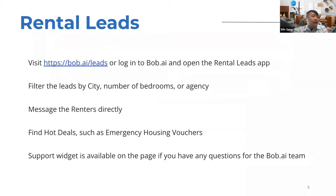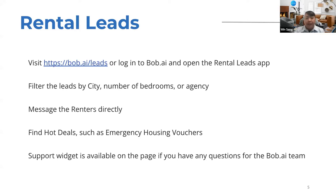For rental leads, visit Bob.ai/leads or log in and open the Rental Leads app. This filters voucher holders by city, number of bedrooms, or any agency you want to work with. You can message renters directly — go to Actions, message the renter, and let them know your unit is available. Emergency housing vouchers currently have a red hot deal logo and may include $500 or $1,000 incentives depending on the agency. Every page also has a support widget at the bottom right.